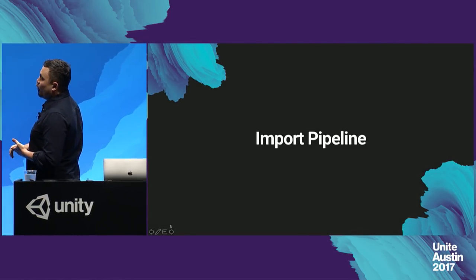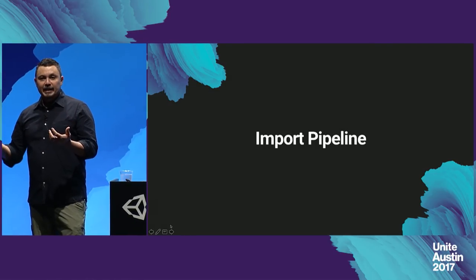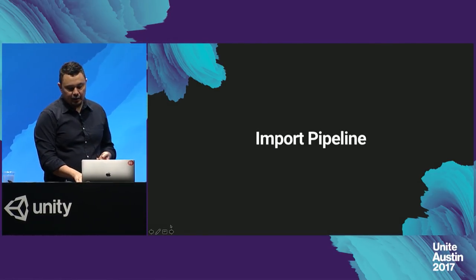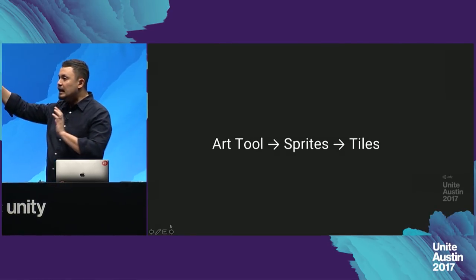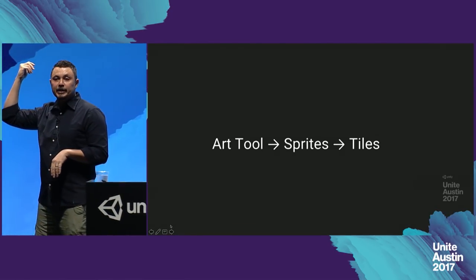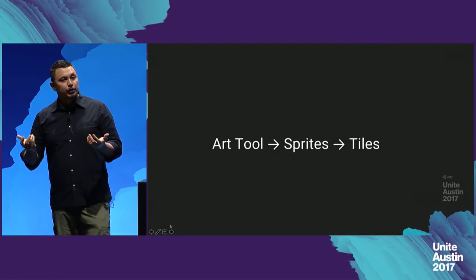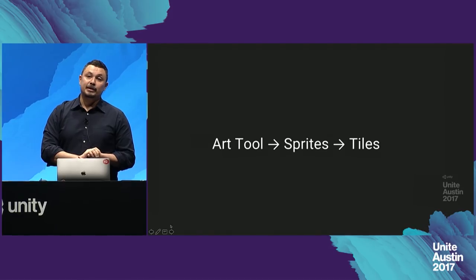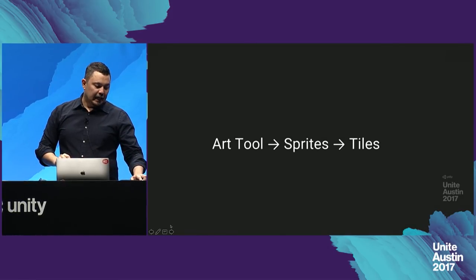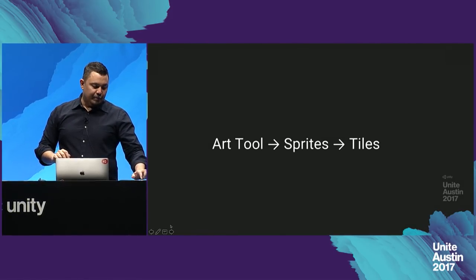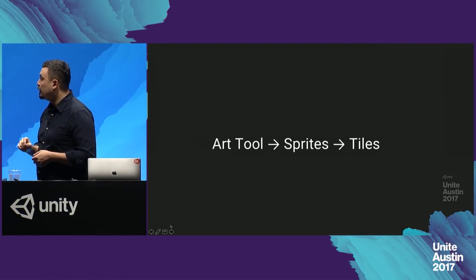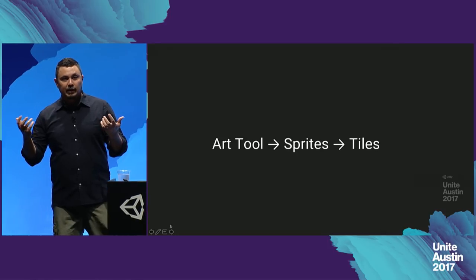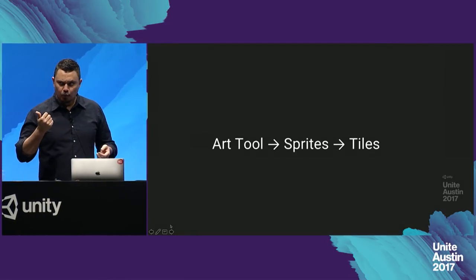Let's talk a little bit about import — how do you get these 2D tiles that you've made in your art tools into Unity? It's very simple. You import it into Unity as a sprite, and then it's a really simple process for changing that into a Tile. We made an intermediate asset that's not just a sprite in the scene — the Tile in Unity holds a reference to a sprite, and we have extra data like the transform and the color of that Tile.